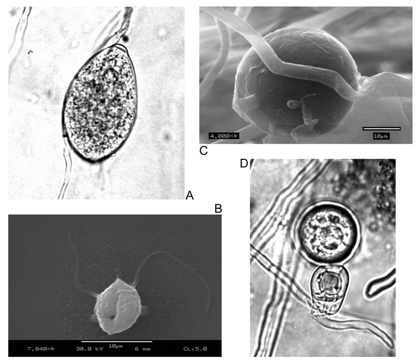The oomycetes rarely have septa, and if they do, they are scarce, appearing at the bases of sporangia and sometimes in older parts of the filaments. Some are unicellular, but others are filamentous and branching.